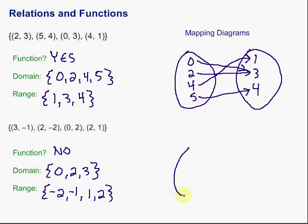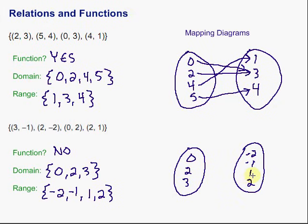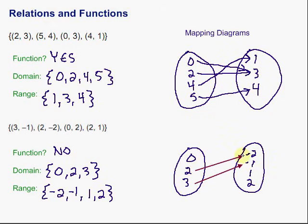If we want to make a mapping diagram for that relation, we make our little bubbles and put those numbers inside. Our domain is 0, 2, and 3. Our range is negative 2, negative 1, 1, and 2. Then we connect what our ordered pairs are: 3 is paired with negative 1, 2 goes with negative 2, 0 goes with 2, and 2 also goes with 1. There's our mapping diagram for that relation.